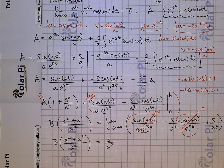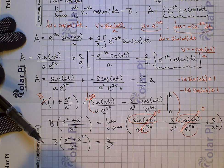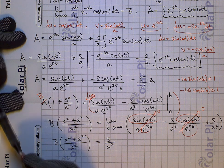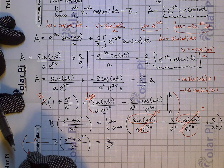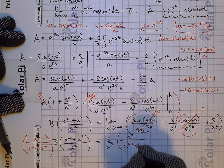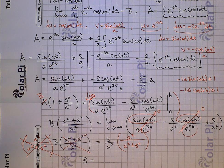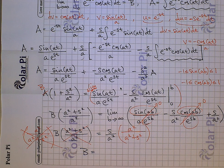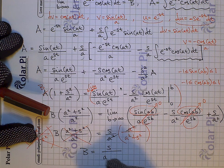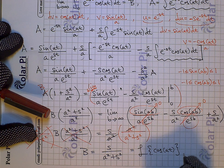So then I have B times the quantity a squared plus s squared over a squared equals s over a squared. Since what we're after is B, which is the Laplace transform of cosine of at, I'm going to multiply both sides by the reciprocal of that fraction — that is, by a squared over a squared plus s squared. On the left side I just get capital B, and on the right side the a squareds cancel, leaving s divided by a squared plus s squared. So the Laplace transform of cosine of at equals s over s squared plus a squared.